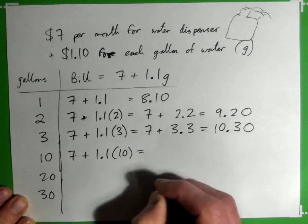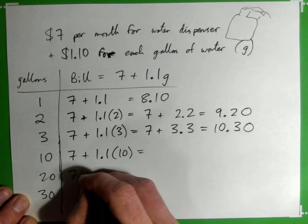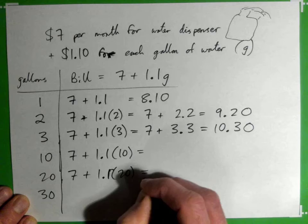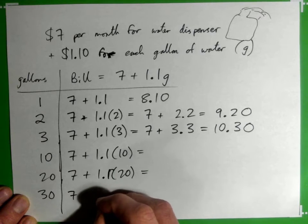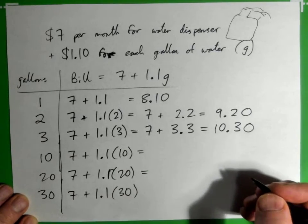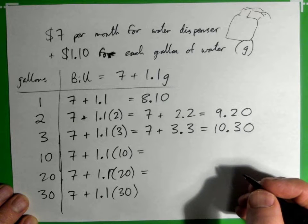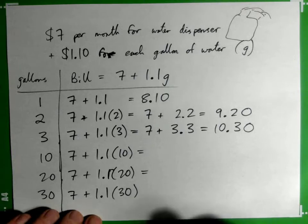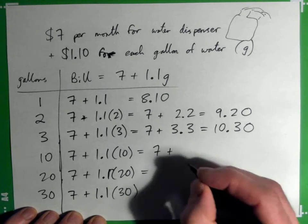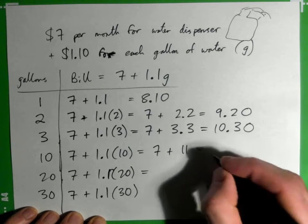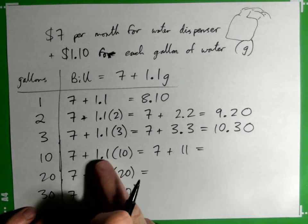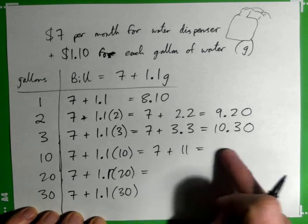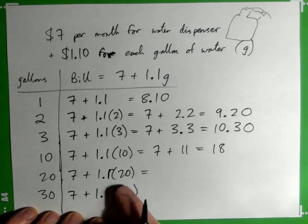And then 20 gallons is just this. That's all. So 10 gallons would be 7 + 10 times 1.1. 10 times 1.1 is 11, so 7 + 11 is $18.